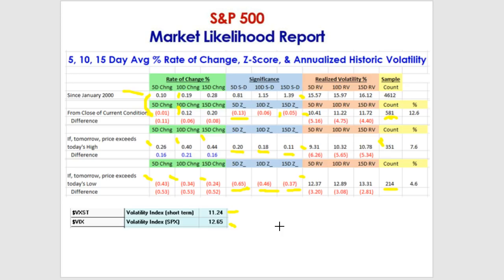And hence, that's why we have a statistical degree of edge in selling premium now, either through butterflies and condors or bull put spreads. This relationship where the short-term is lower than the longer-term — the 9-day VIX is lower than the 30-day — is a bullish one favoring the premium sellers.